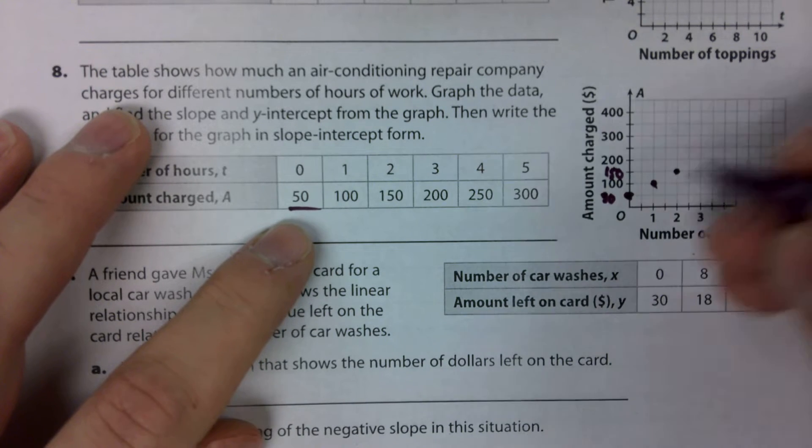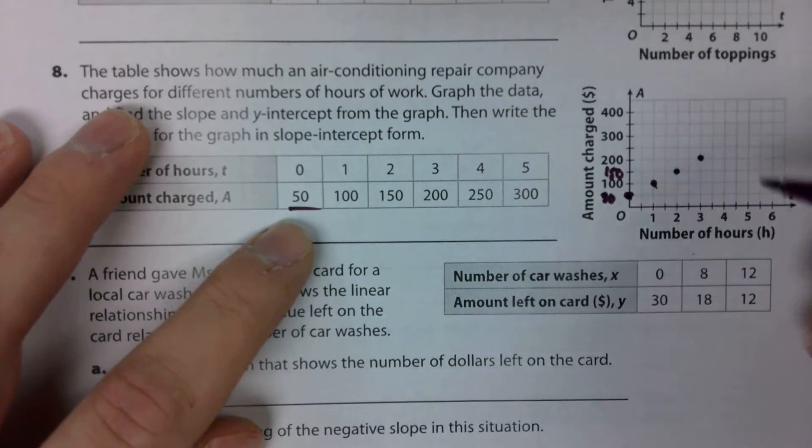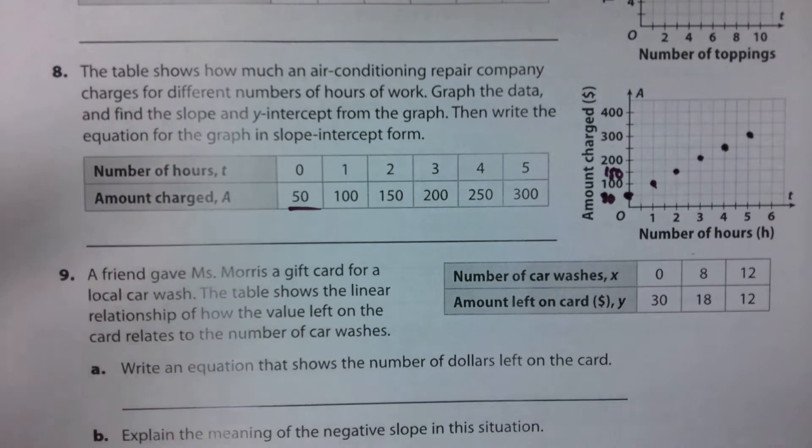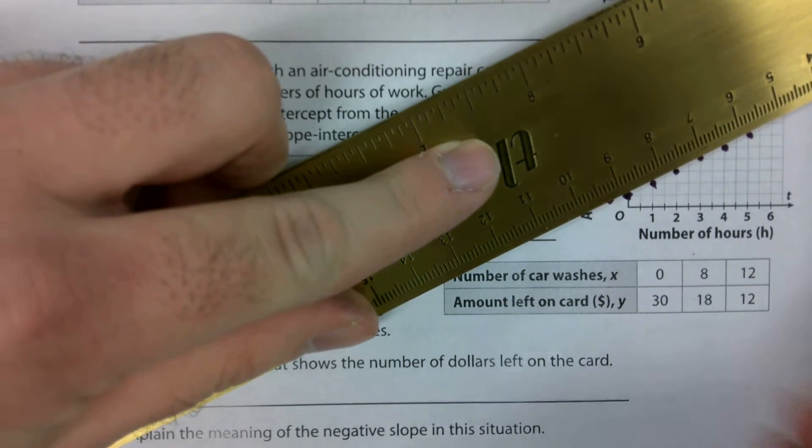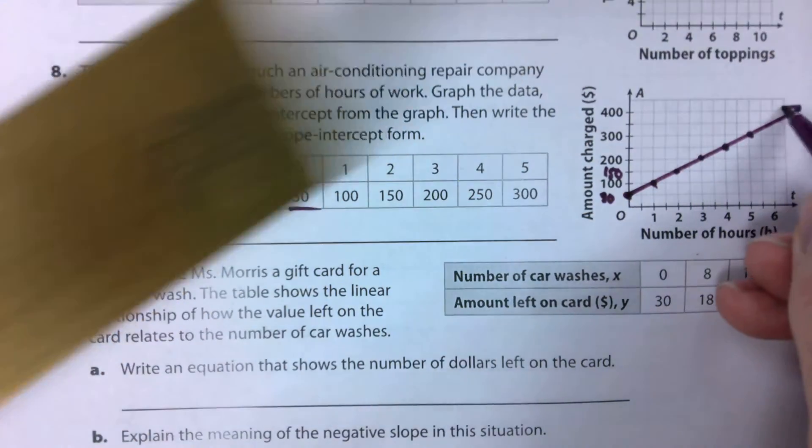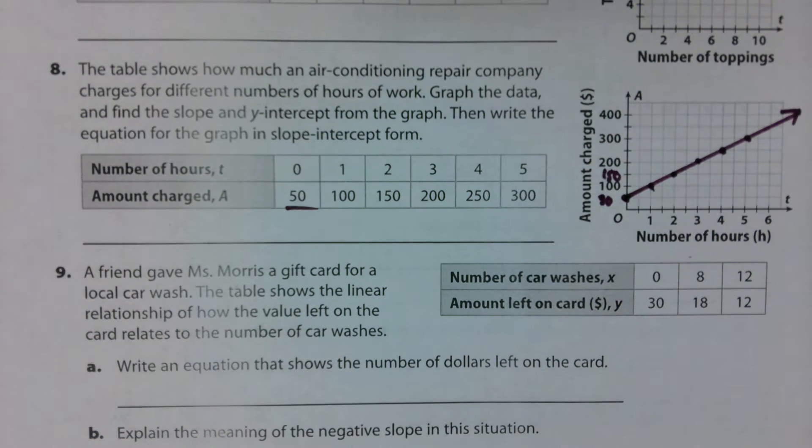Then we go 2, 150, 3, 200, 4, 250, and 5, 300. So we can see as we're drawing those points that we start to see a line forming. You should have rulers in your box if you need a ruler. So our graph is going to look like that.